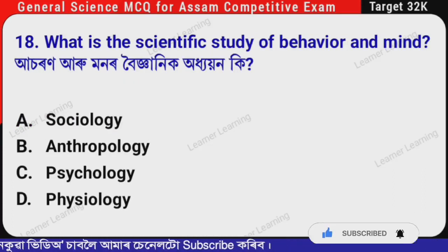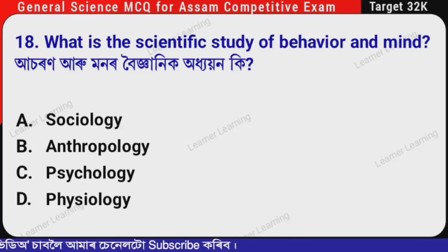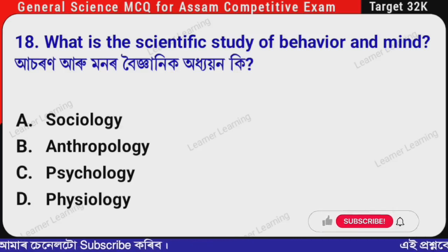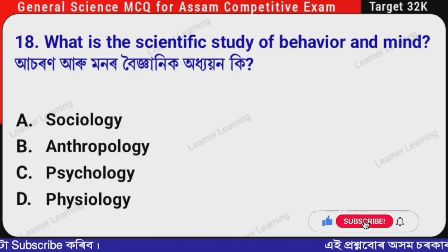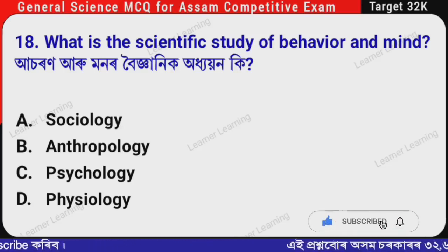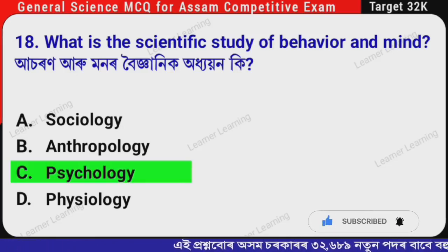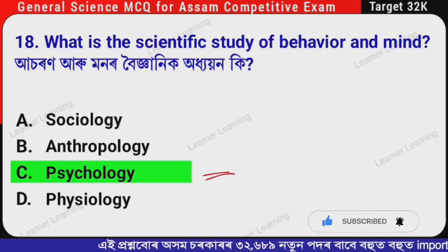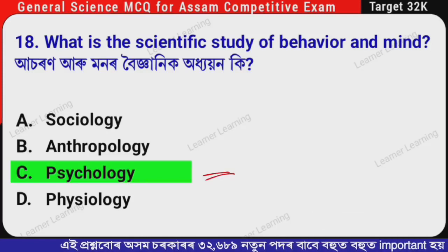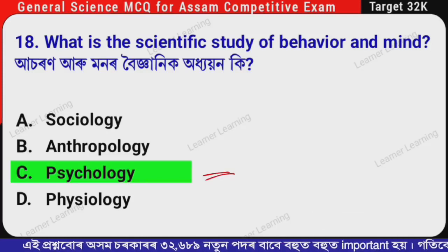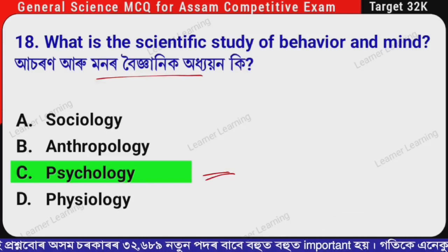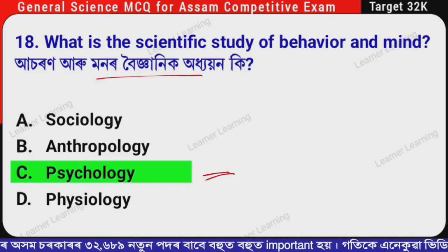Next question: What is the scientific study of behavior and mind? (Assamese: Ashran aru monar bohigyanik oidhoyan ki?) The correct option is Option C — Psychology. The scientific study of behavior and mind is Psychology.